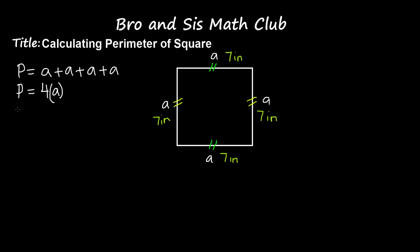So what I need to do is multiply four by seven, because each side measures seven inches and there are four sides. So P, which is perimeter, is equal to 28 inches.